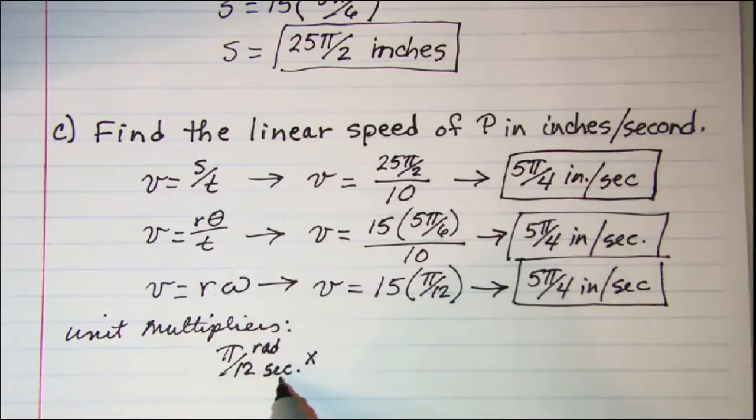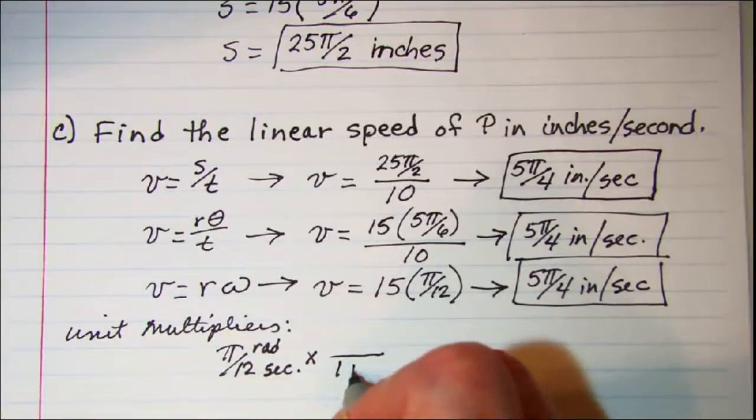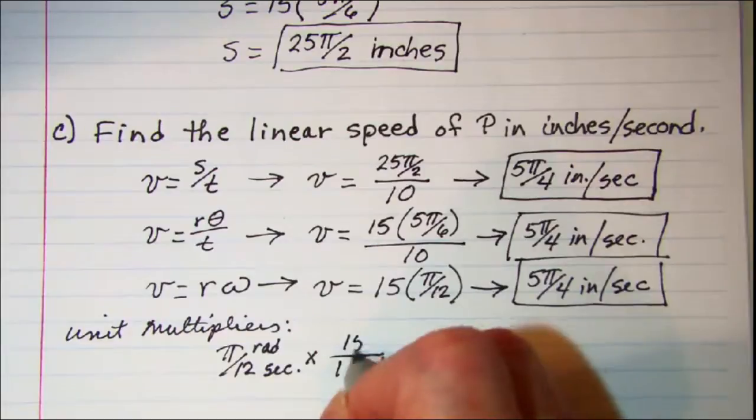So I've already got my seconds in the denominator. But I can use the unit multiplier 1 radian is equal to 15 inches.